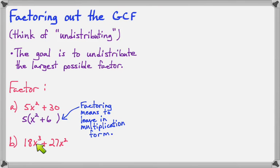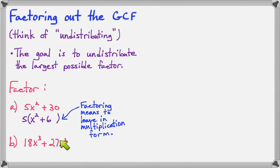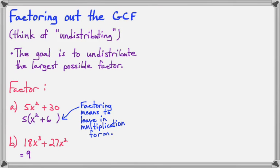Here is 18x to the third plus 27x squared. If you look at the two coefficients, 18 and 27 can both be divided by 9. Now this has a third power of x and this has a second power of x, which means they both share a factor of x squared, because this one has x squared plus an extra x. They both contain at least two x factors, so I can write 9x squared outside the parentheses.